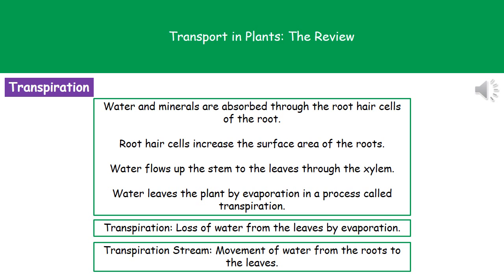Thinking about the process of transpiration, we're actually talking about the loss of water from the leaves by evaporation. Sometimes I like to ask you to write the definition for transpiration, and there are two ways we can get our marks here. We can either say it's the loss of water from the leaves by evaporation, or we can say it's the loss of water vapor from the leaves. If you use the phrase water vapor, do not then say by evaporation, because we can't evaporate water vapor — it's already been evaporated.